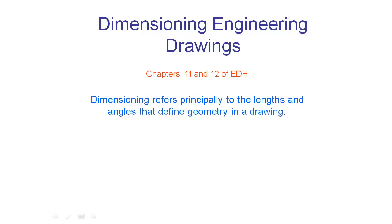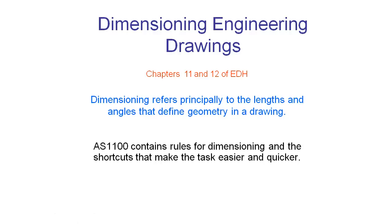In the prior videos we taught you how to represent the geometry of an object in orthogonal views, and in these videos we're going to explain how to correctly dimension them. These dimensioning conventions are covered in chapters 11 and 12 of your engineering drawing handbook. Basically, dimensioning refers to how we go about giving lengths and angles to our geometry to properly define it. The standard we're drawing to is called Australian Standard 1100, which contains a whole lot of rules for dimensioning and shortcuts to make our task easier and quicker.